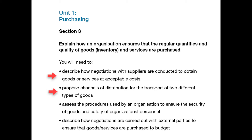Bullet point 3 applies to the physical transportation of goods, the physical delivery of services, and the electronic delivery of products and services, focusing on procedures used to protect staff involved in the delivery chain, and the procedures to protect the goods themselves.